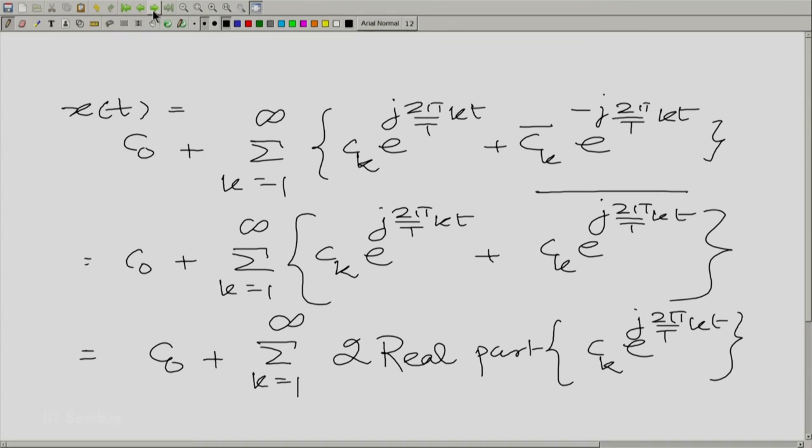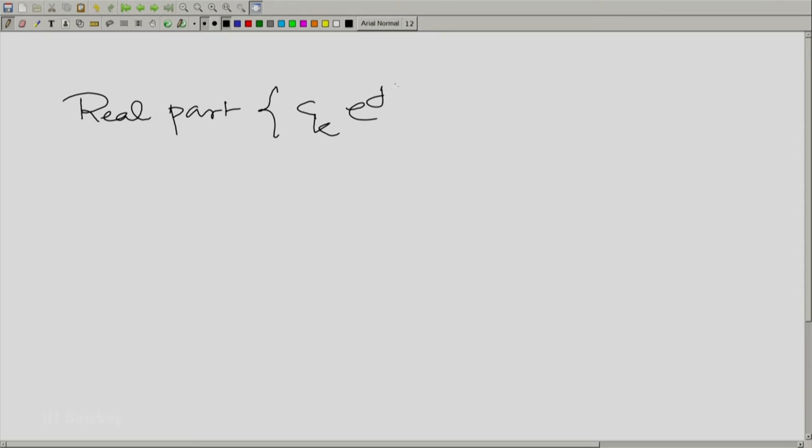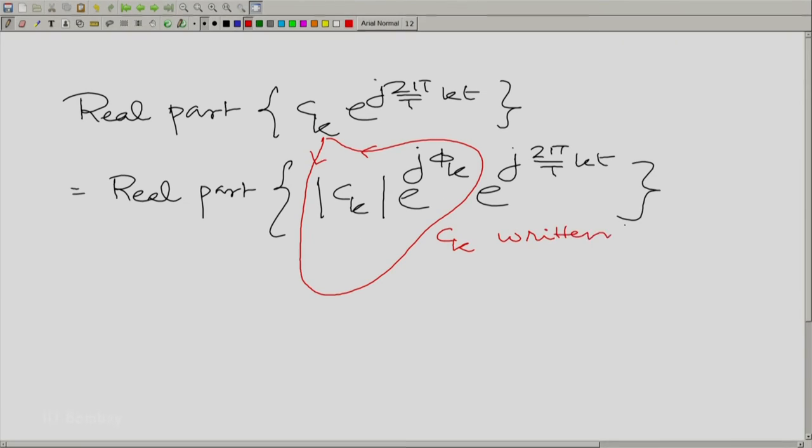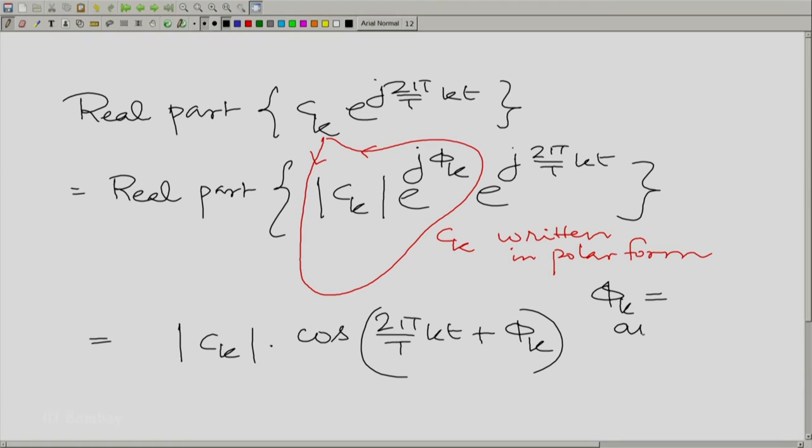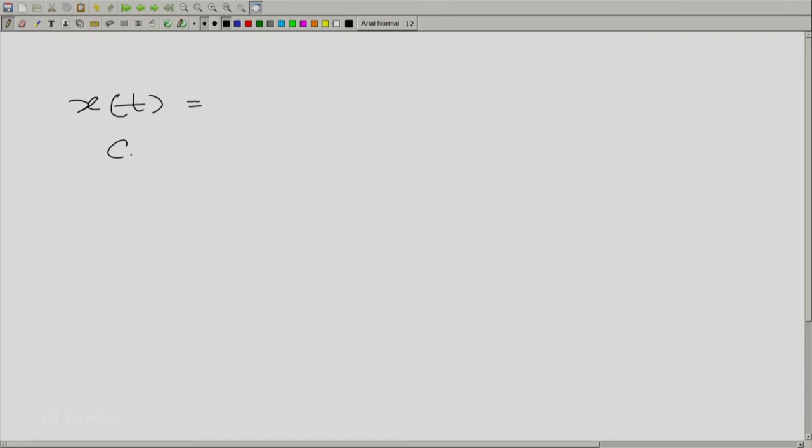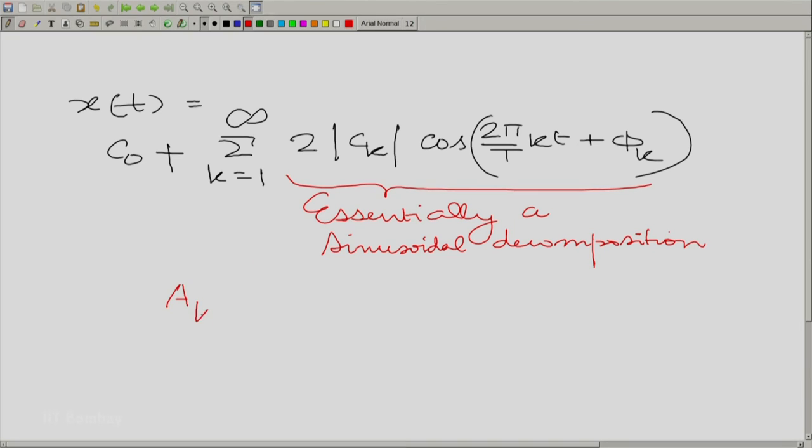Now, how do we write down the real part? Real part is essentially the real part, where you write c_k in polar form. You have written c_k in polar form, magnitude and angle. And that gives you mod c_k cos 2 pi by T k t plus phi_k, where phi_k is essentially the angle, angle of c_k. Overall what we have is, x(t) is then c_0 plus summation k going from 1 to infinity 2 times mod c_k cos 2 pi by T. And here, essentially we have a sinusoidal decomposition. Essentially here a_k is 2 mod c_k and phi_k is of course, as it is.